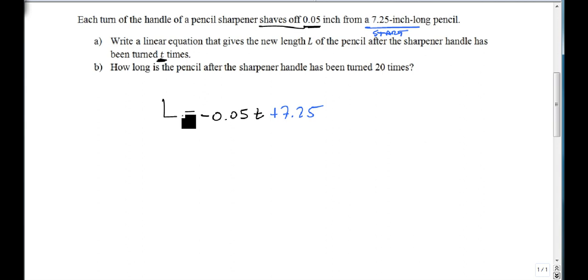So now that we have our model, this is the answer to A. The length of the pencil is equal to minus 0.05 times the number of turns plus our starting length. Or we could write this if we really wanted to, 7.25 minus 0.05t. Still linear, just a variable with multiplication and addition or subtraction.